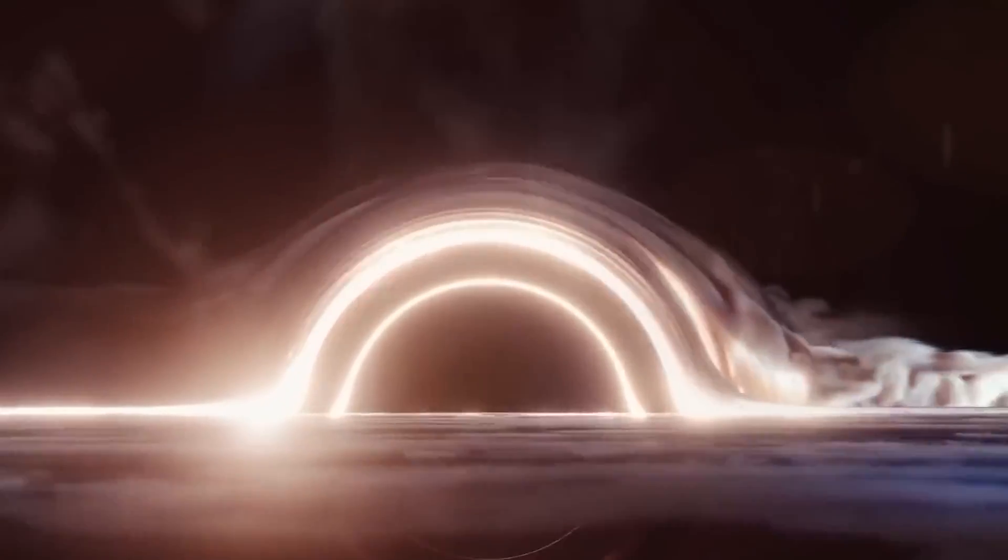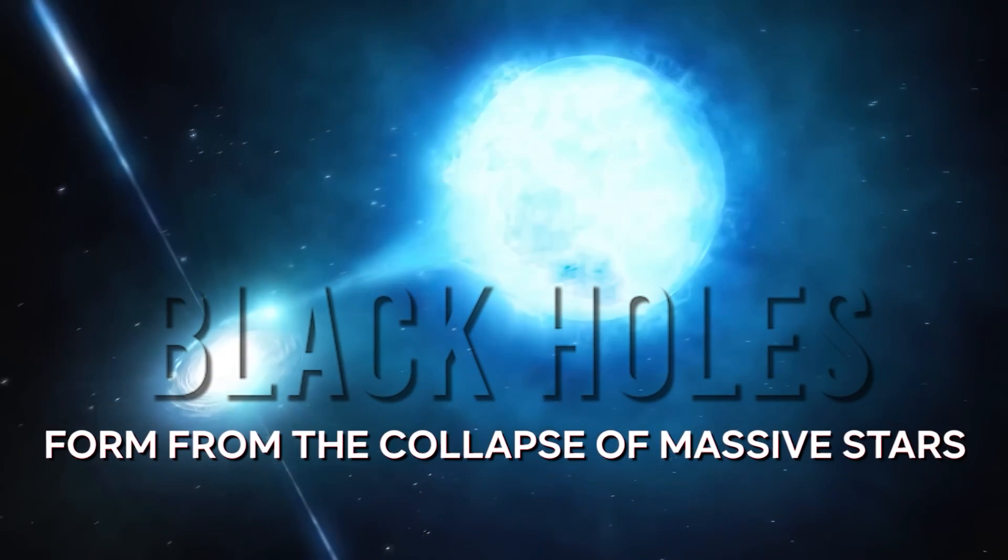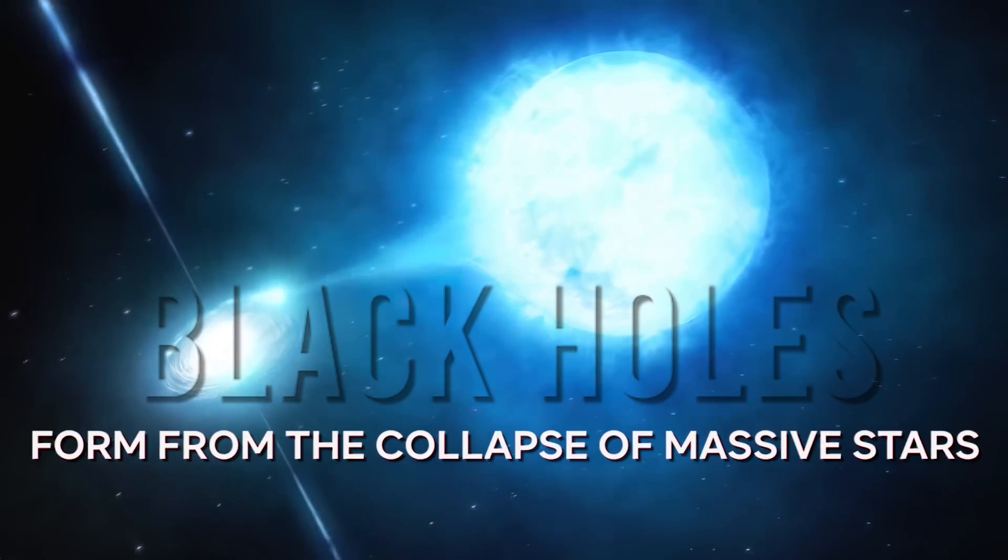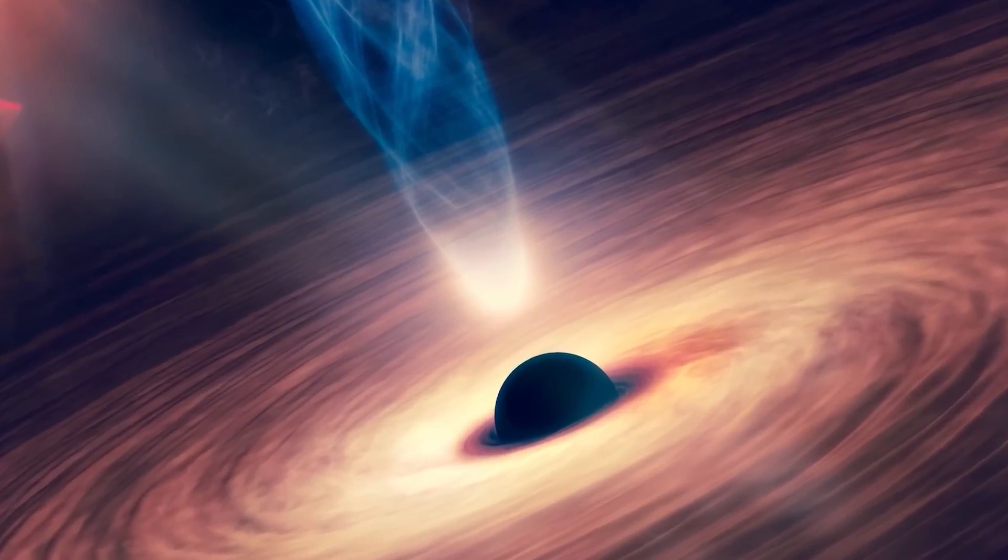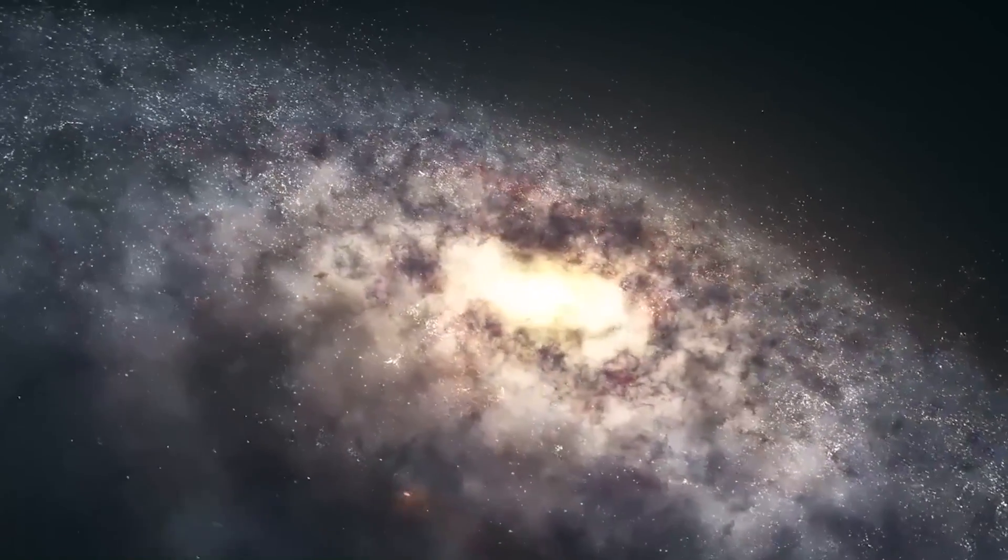Understanding the origins of black holes can shed light on similar cosmic entities, like white holes, which we'll discuss later. Black holes form from the collapse of massive stars. When stars exhaust their nuclear fuel, they can implode. Stars about three times the mass of the Sun can become neutron stars or white dwarfs.